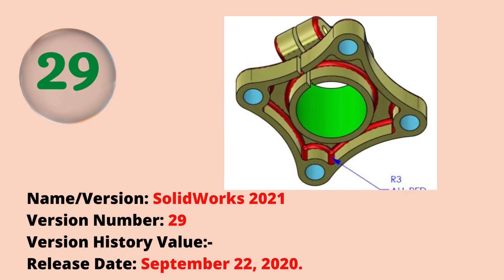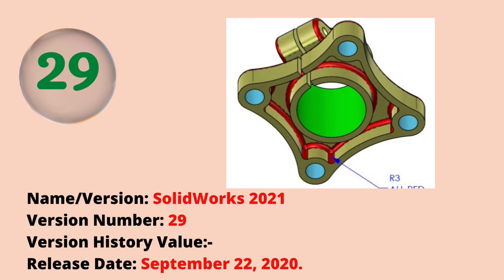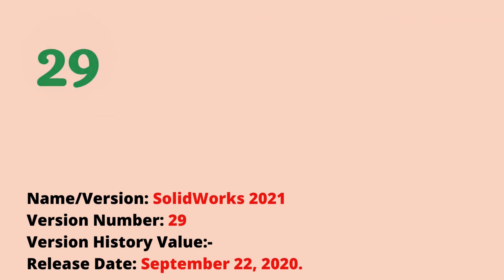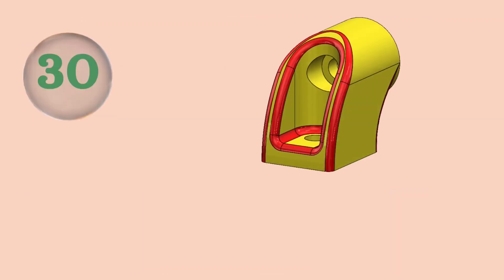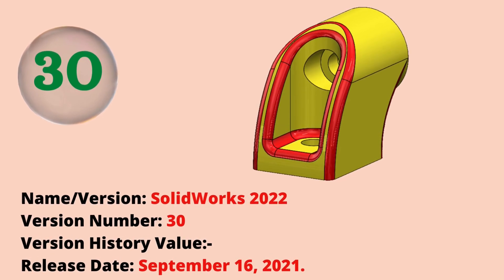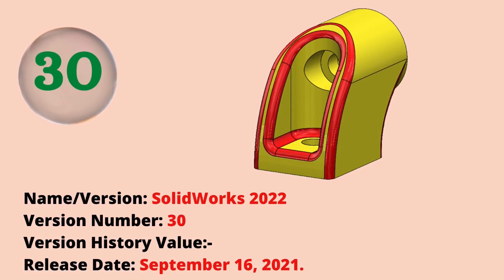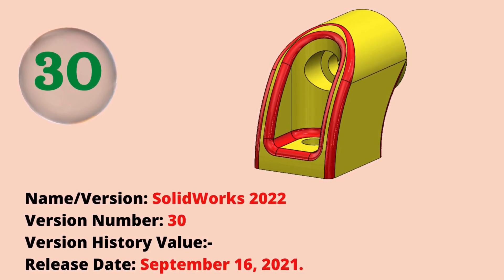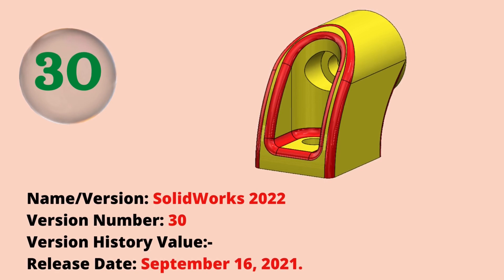The twenty-ninth version was SOLIDWORKS 2021. The release date was September 22, 2020. The thirtieth version is SOLIDWORKS 2022, which is the latest version of SOLIDWORKS. These are the versions of SOLIDWORKS up to 2022. Which was your first version and which version are you using now? Please let us know. Thank you for your time, I'll see you next time.